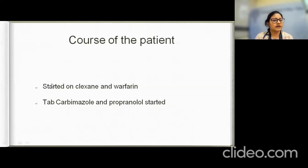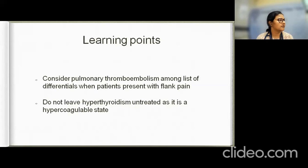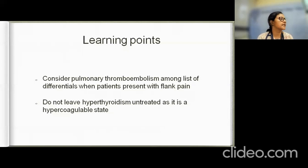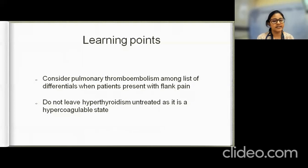The patient was started on clexane, warfarin, carbimazole, and propranolol. She is coming for follow-up next month and the pro-thrombotic workup is yet to be sent. The key learning points are: pulmonary thromboembolism should be considered as a differential in patients presenting with constant flank pain, and hyperthyroidism should never be left untreated as it is a hypercoagulable state.